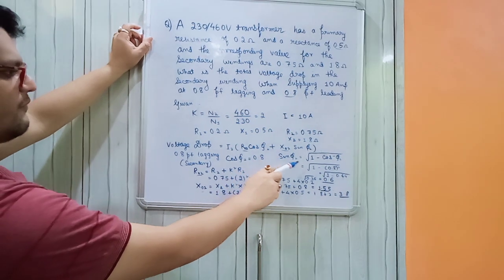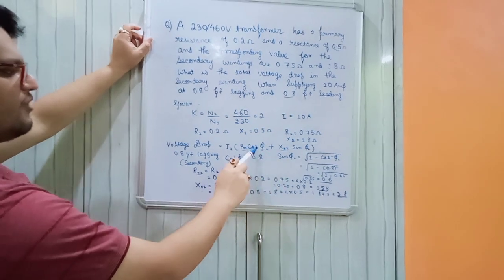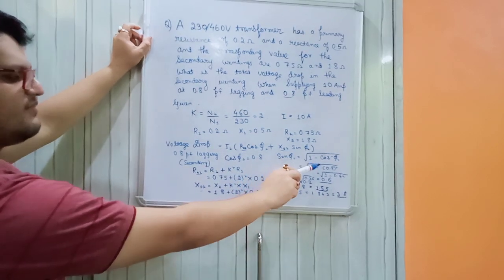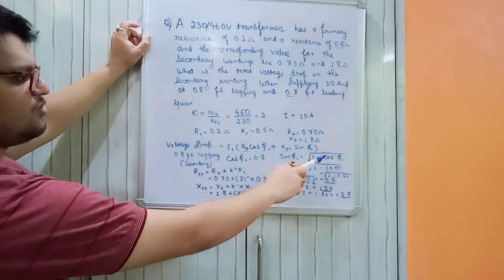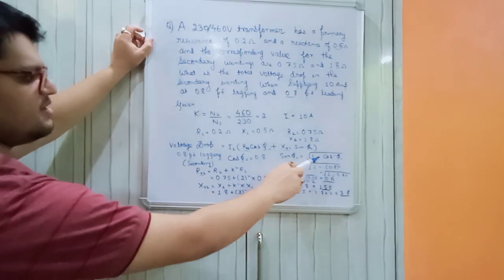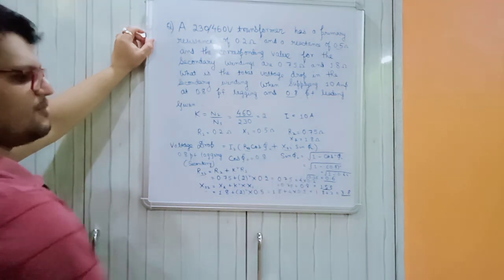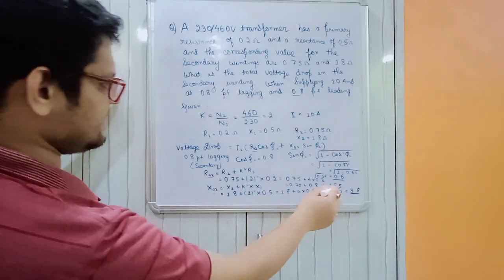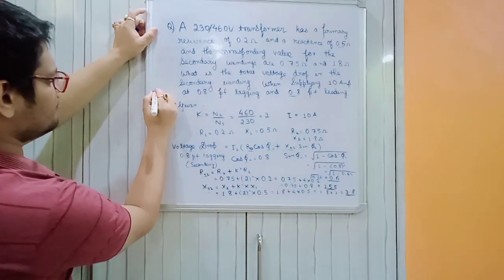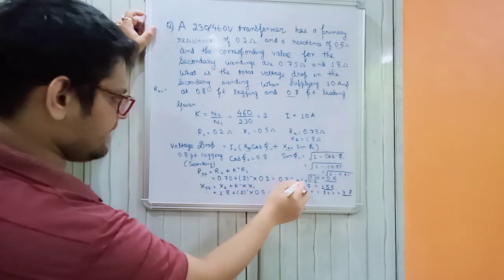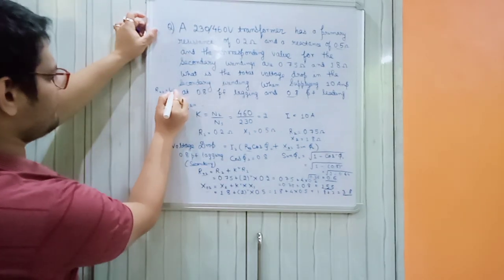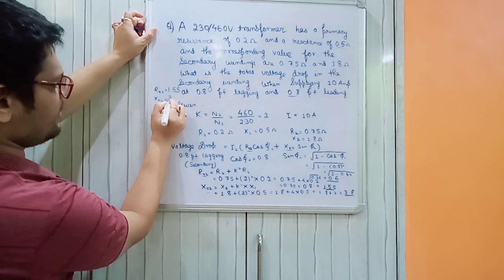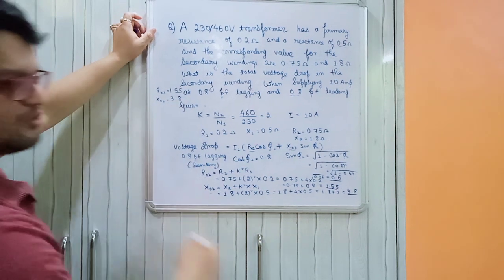We have found: cos φ₂ = 0.8, sin φ₂ = 0.6, R02 = 1.55 ohm, and X02 = 3.8 ohm. Now I'll erase the working area to calculate the final voltage drop.